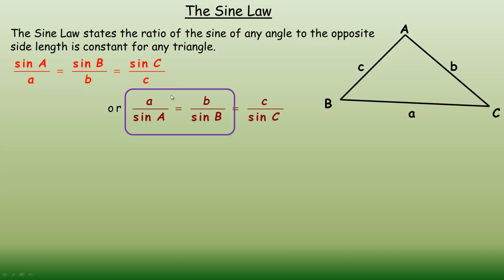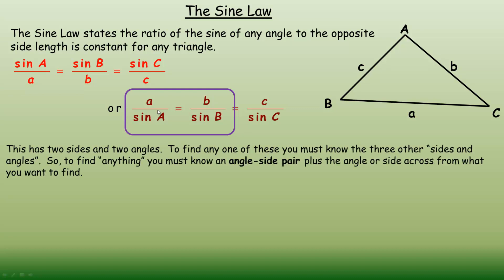We only use two of the ratios at a time. You wouldn't use all of sine A over A, sine B over B, sine C over C together to find some side or angle. So at any one given time we're only using two of them. In this setup there are two sides and two angles — four things — and to find any one of them you need to know an angle-side pair and the other thing across from what you're trying to find.